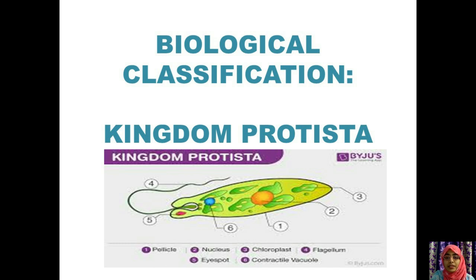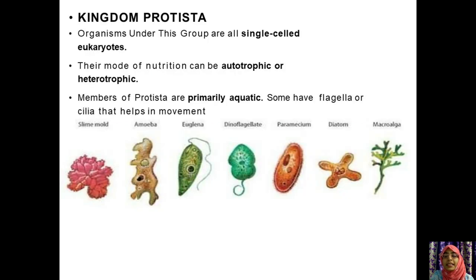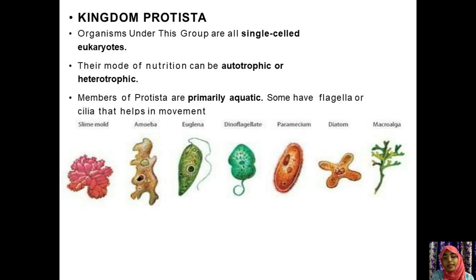Now we are going to study about Kingdom Protista, the second kingdom of the five-kingdom classification. In Protista, organisms consist of a single cell and usually have several flagella.